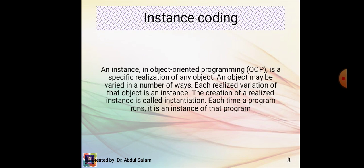Instance coding: an instance in object-oriented programming is a specified realization of any object. An object may be varied in a number of ways; each realized variation of that object is an instance. The creation of a realized instance is called instantiation. Each time a program runs, it is an instance of that program.